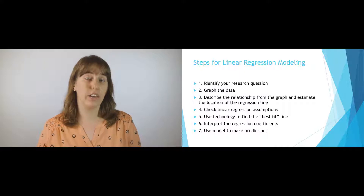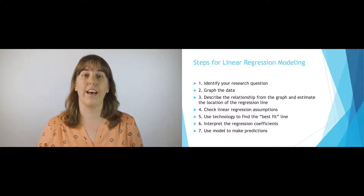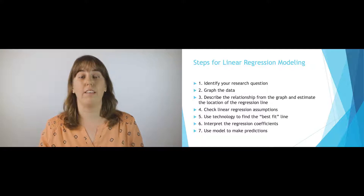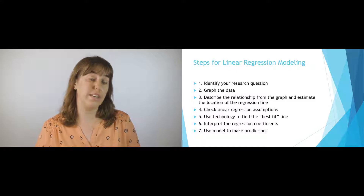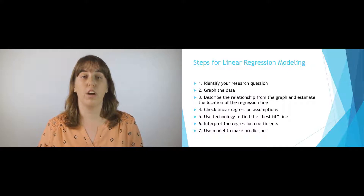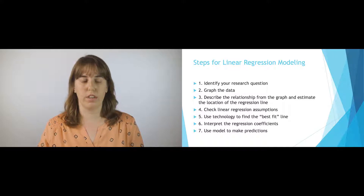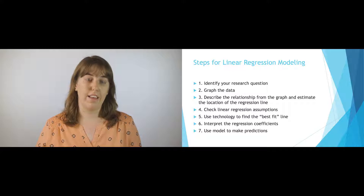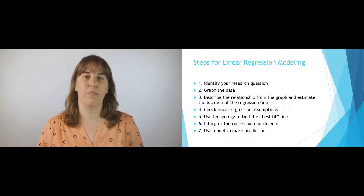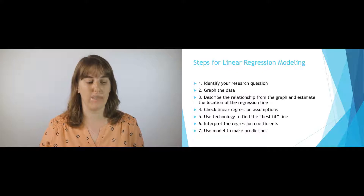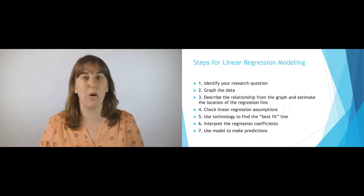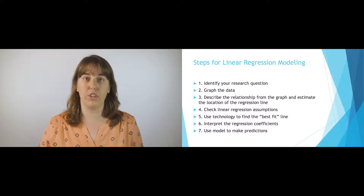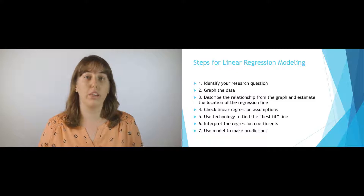The fourth step is to check our linear regression assumptions — we want to make sure a linear model is correct, that there's no curve in our data requiring a different type of model, and that there are no violations of linear regression assumptions. The fifth step is to use technology to find the best fit line, which we'll discuss later in the module. Sixth, we interpret the regression coefficients — the output from our technology to fit the linear regression. And seventh, we use the model to make predictions.